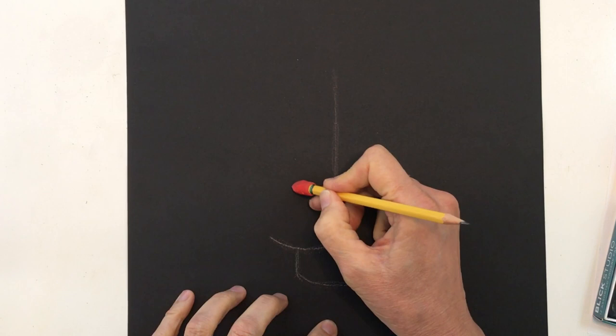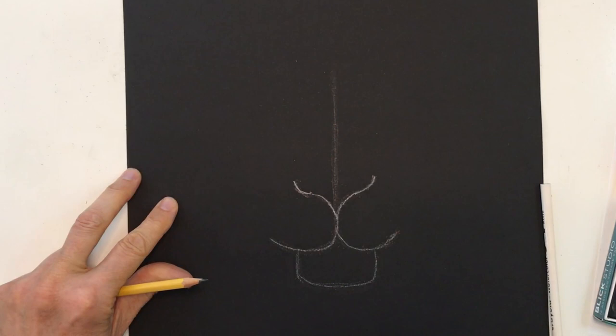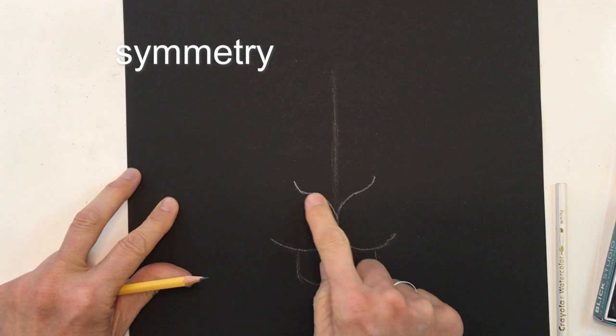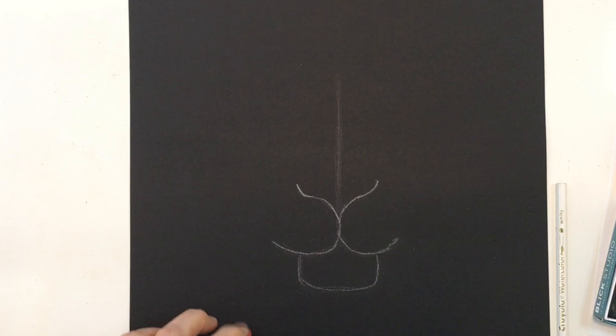Pay close attention to symmetry. The center line helps — what's happening on one side should match the other side. The curves should be the same, and how far you come out on each side should be the same. Take a moment to check and make any slight adjustments — it's okay to adjust whenever you need to.